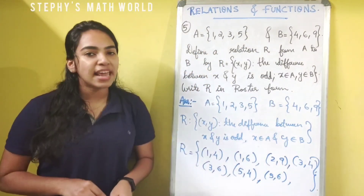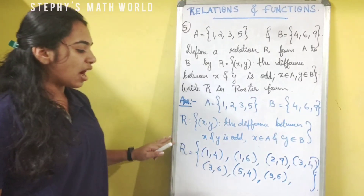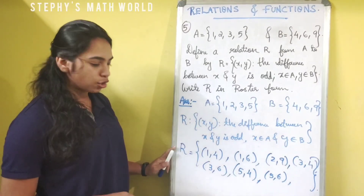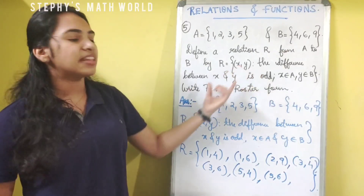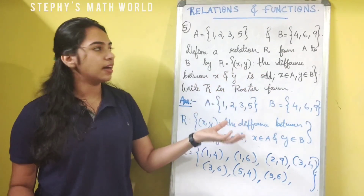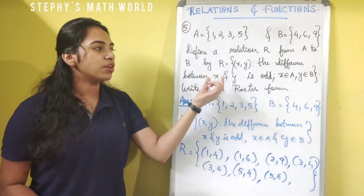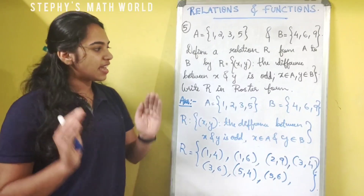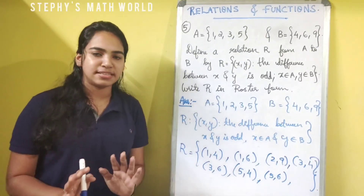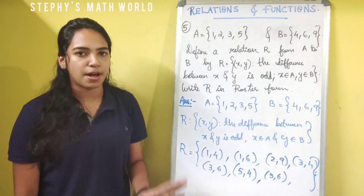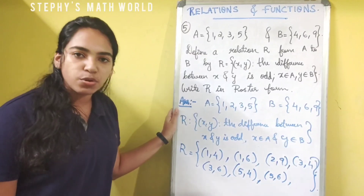So these are all the elements of R. We have 7 ordered pairs in total. We will now move to the next question. Let's do that question again and start with the new one.